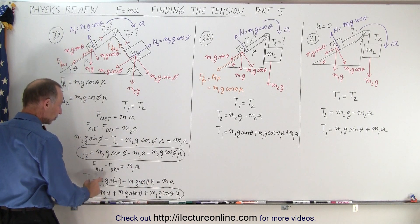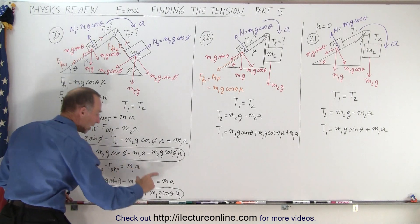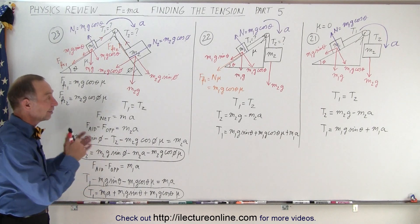Solving for T1 we get T1 is equal to the force required to accelerate the object, to hold it against gravity along the incline, and to overcome the friction. And that is how we find the tension in these various ways.